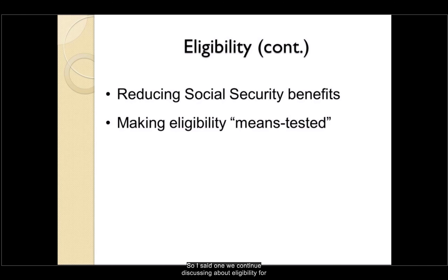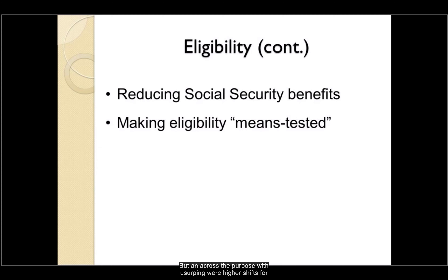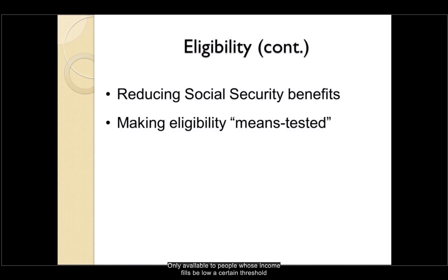Others suggest reducing Social Security benefits to make them reflect the actual rate of inflation, but an across-the-board reduction would result in more hardships for the poorest beneficiaries. Some argue for making eligibility means-tested, only available to people whose income falls below a certain threshold. Another variation is an affluence test, where benefits might be eliminated for people who are above a certain income threshold.